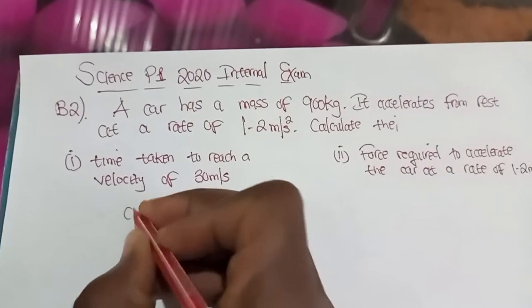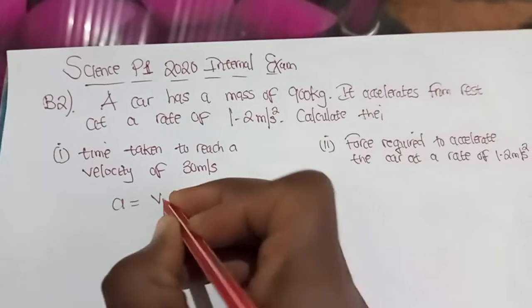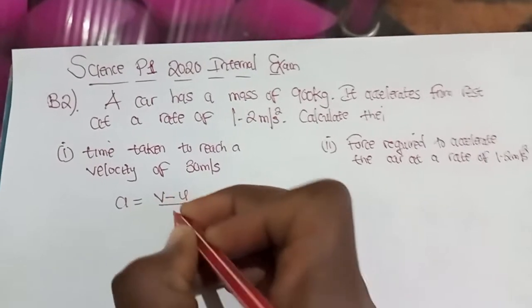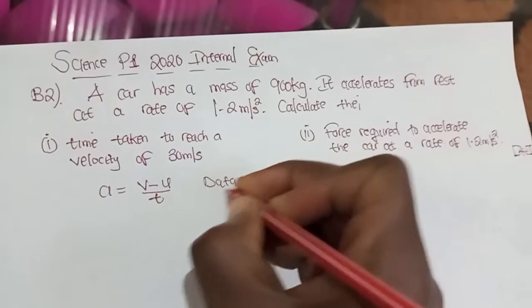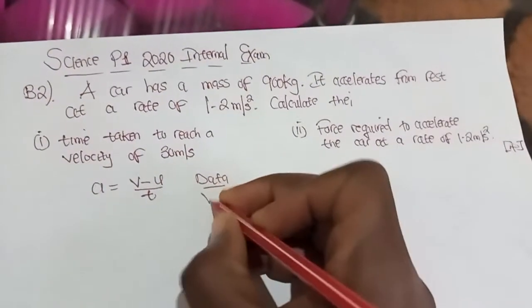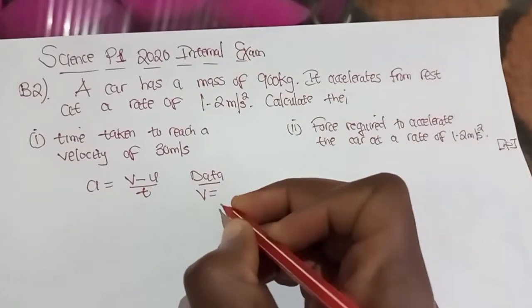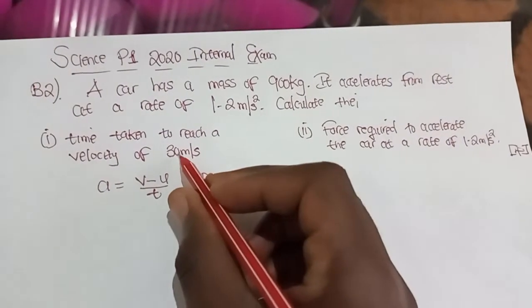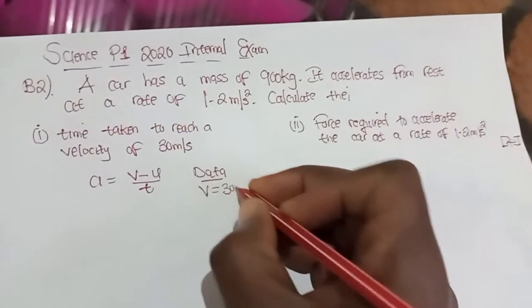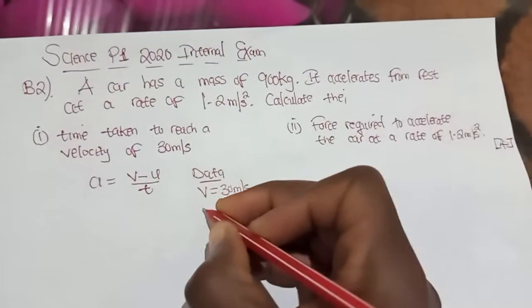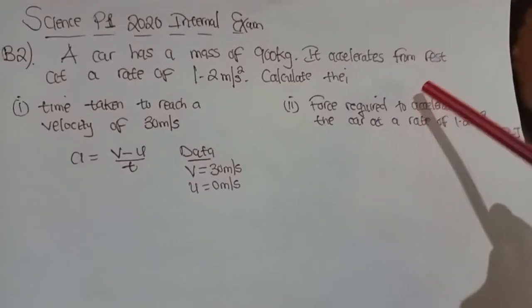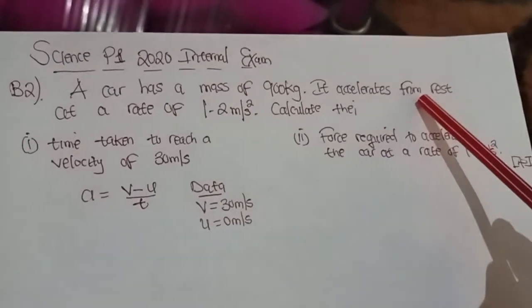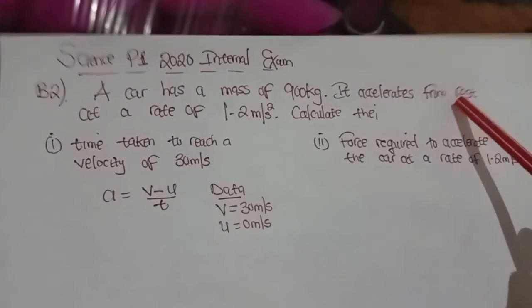We're going to say: acceleration equals final velocity minus initial velocity over time taken. Afterwards, we're going to come up with our data and list out what we have. The final velocity has been given as 30 m per second. The initial velocity has been given as 0 m per second, because the problem said 'from rest' — when they say from rest, they mean 0 m per second.